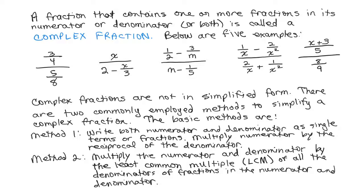The second one has an X alone in the numerator but in the denominator, there's two terms, 2 minus X over 3. So there's a fraction there, and you can see from the third, fourth and fifth examples, I have fractions in both the numerator and denominator.